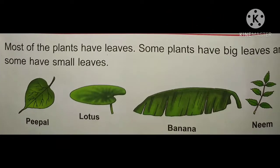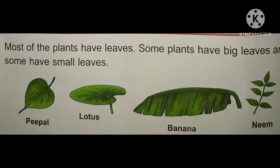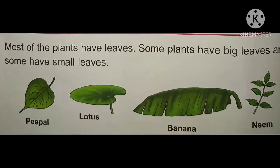Most plants have leaves. Some plants have big leaves and some have small leaves. For example, neem has very small leaves, while the banana plant has very big leaves. Lotus and peepal also have leaves of different sizes. Every plant has leaves of different sizes — some big, some small.